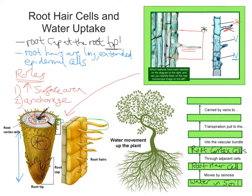Then we move into what's called the vascular bundle — more specifically, the xylem vessels in the stem. Through the transpiration pull, we get taken ultimately to what's called the midrib of the leaf. From that midrib, through veins — which are the vascular bundle, so we're talking about xylem — we then move to what are called the mesophyll cells, specifically the spongy and palisade mesophyll tissue. That's where we're taking that water to be used for photosynthesis.